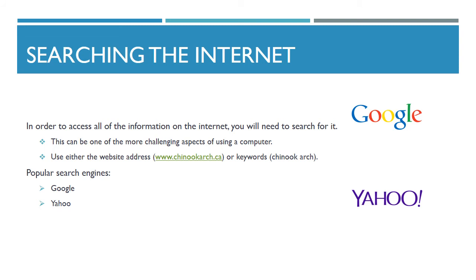A search engine is how you search for things, and Google is by far the most popular search engine. Sometimes when you first load your internet browser, the home page will be set to a search engine. Your address bar will also double as a search bar. Another way to get to a search engine is to type the address into the address bar, like www.google.com, and once there, you can type keywords or entire sentences into the text box.